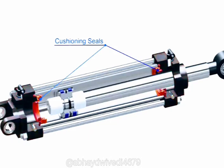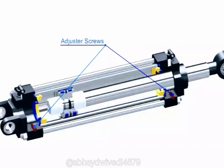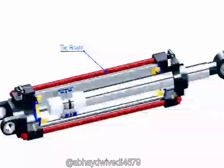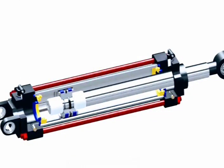Cushioning buffers and seals are installed on respective ends. Captive adjustable cushioning screws are installed on each end; these screws enable the user to adjust the optimum cushion at the end of the stroke. This whole assembly is held together with tie rods, which also provide compressive and tensile strength to the actuator.